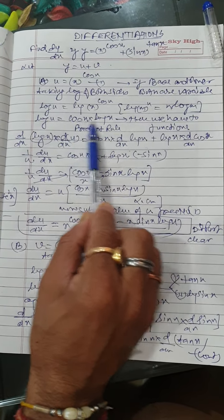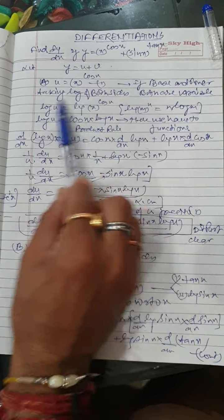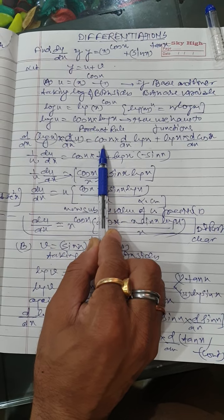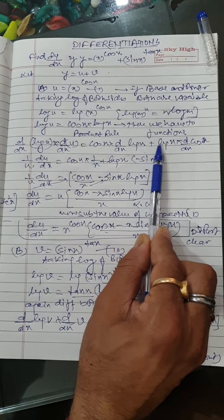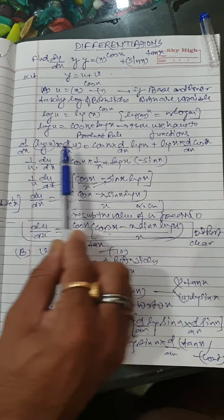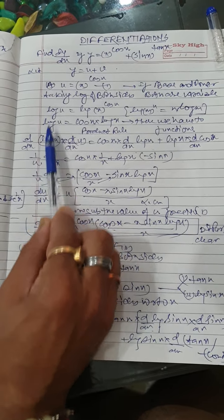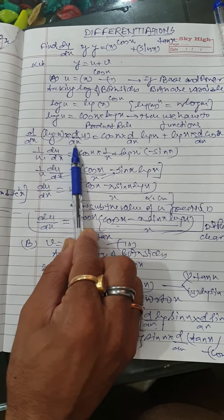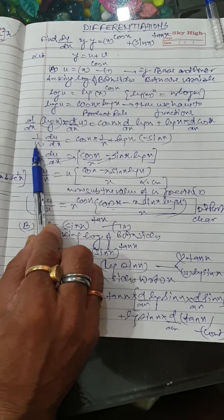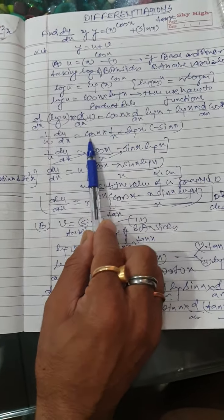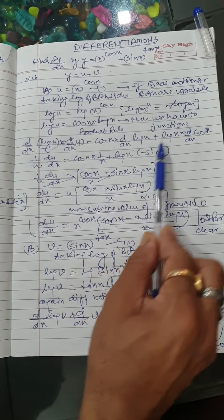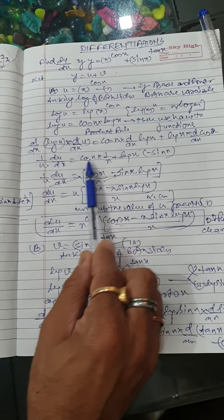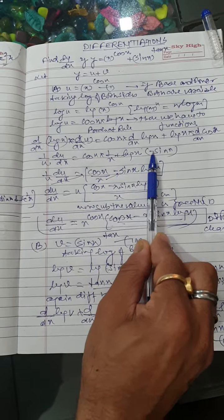We have to use the product rule on the right hand side. So d/dx of log u equals first function cos x into d/dx of log x, plus second function log x into d/dx of cos x. By the chain rule on the left, d/dx of log u gives one upon u times du/dx. This equals cos x times one upon x, plus log x times minus sine x.